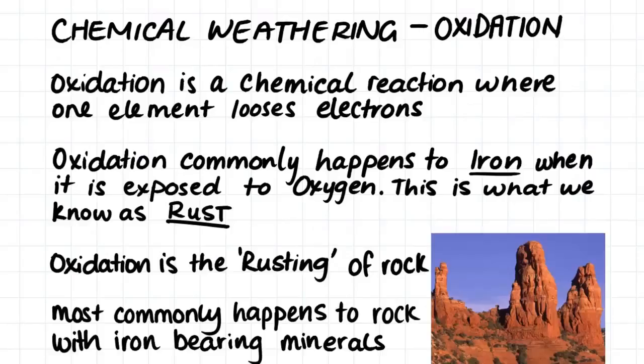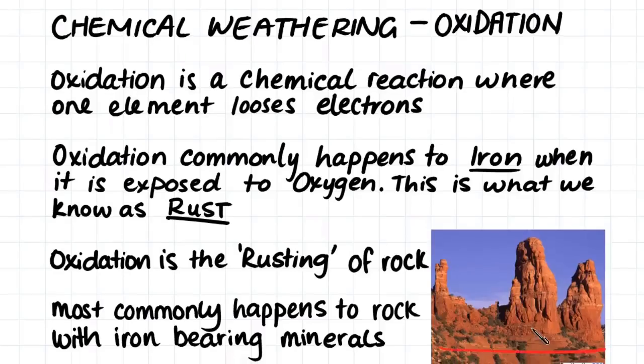Another type of chemical weathering is oxidation. Oxidation is a chemical reaction where one of the elements involved loses its electrons. Oxidation commonly happens to iron when it is exposed to oxygen. This is what we know as rust. When we are talking about chemical weathering, oxidation is the rusting of rock. This is why we get the red coloring on some rocks. This red coloring indicates that the minerals within the rock have iron in them.